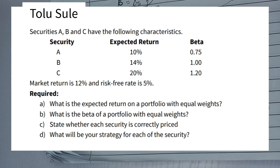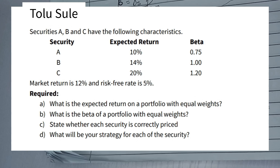The betas for the respective securities are given — that is the systematic market risk. The market return is 12% and the risk-free rate is 5%. The question asks: what is the expected return on the portfolio with equal weight, what is the beta of the portfolio with equal weight, state whether each security is correctly priced, and what would be your strategy for each security.